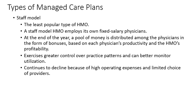The staff model is the least popular type of HMO. It employs physicians on fixed salaries regardless of patient volume. At the end of the year, a pool of money is distributed as bonuses based on each physician's productivity and the HMO's profitability. It exercises greater control over practice patterns and allows better utilization monitoring, but continues to decline due to high operating expenses and limited choice of providers.